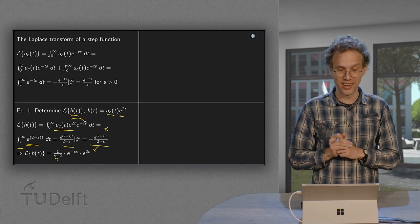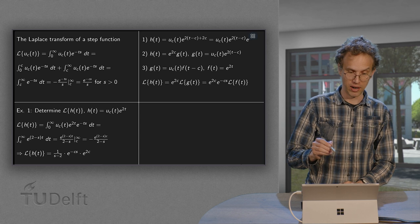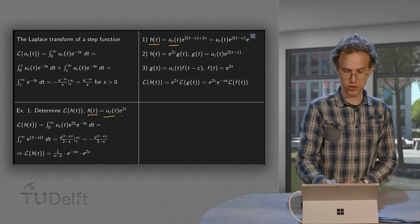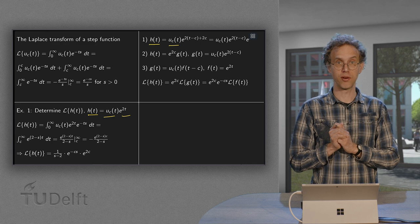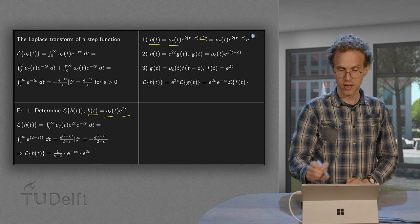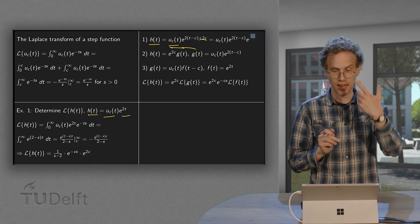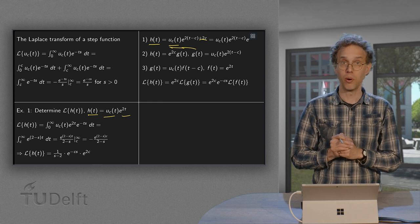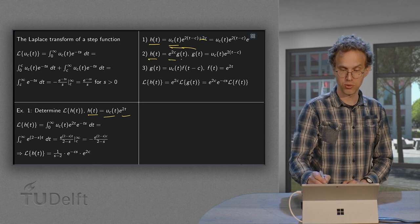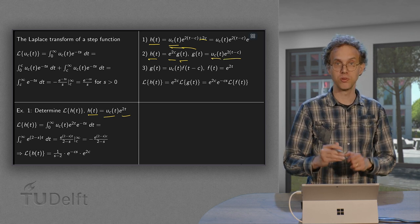Why did we rewrite in this way? We can now observe that h(t) = u_c(t)·e^{2t}. We can rewrite e^{2t} as e^{2(t-c)+2c}, so h(t) = u_c(t)·e^{2(t-c)}·e^{2c}. In other words, h(t) equals e^{2c} times g(t), where g(t) = u_c(t)·e^{2(t-c)}.